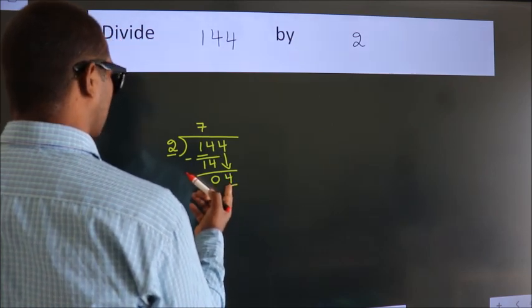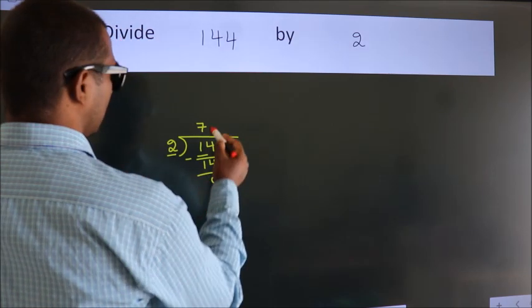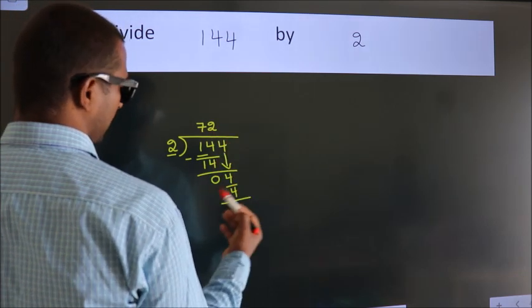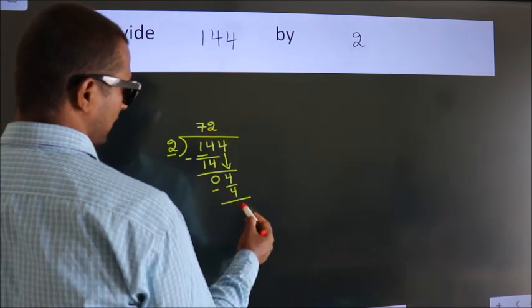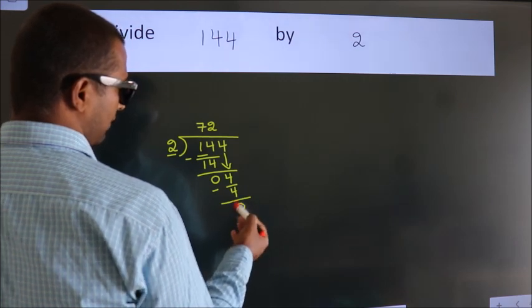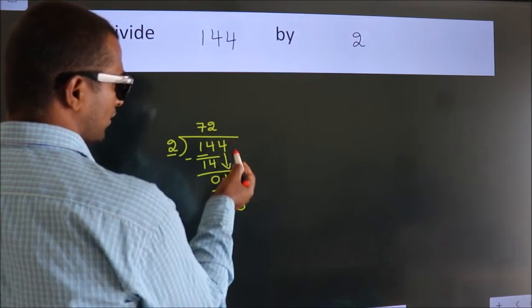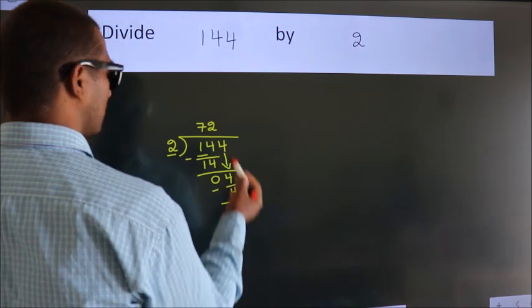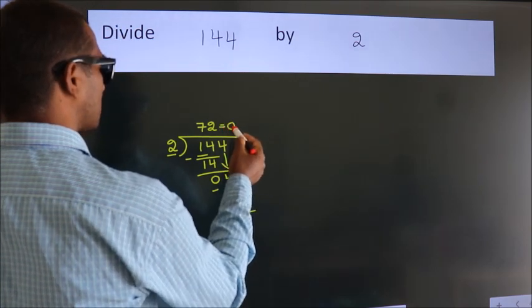When do we get 4? In 2 table. 2 times 2 equals 4. Now we subtract. We get 0. After this, no more numbers to bring down. And we got remainder 0. So this is our quotient.